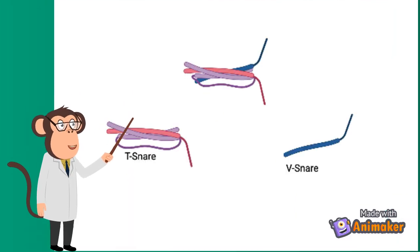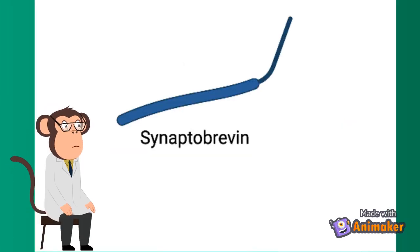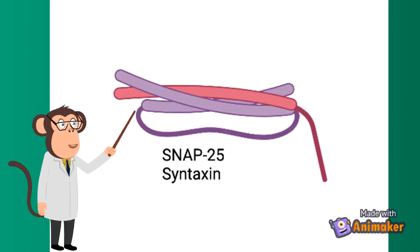The snare complex consists of the T-snare and the V-snare. The V-snare, also known as the vesicle snare, is made up of the protein synaptobrevin. The T-snare, also known as the target snare, is made up of the proteins SNAP25 and syntaxin.